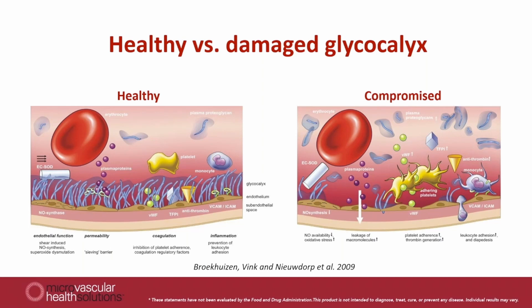When glycocalyx is damaged — and we know it is damaged by all kinds of risk factors including smoking, hypertension, diabetes, aging, and obesity — you lose these polysaccharide structures. Nitric oxide production becomes impaired because the endothelium no longer senses blood flow. Superoxide dismutase enzymes can no longer bind to the endothelium, leading to more oxygen radical activity near the vessel wall. You start losing proteins and fluids, and platelets and leukocytes begin sticking to the wall.